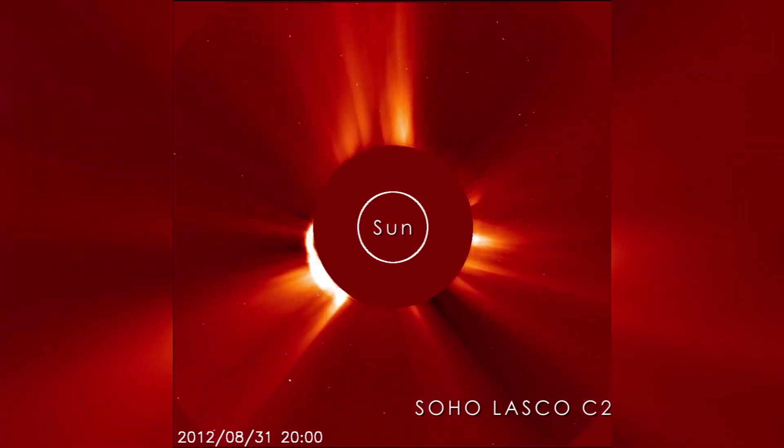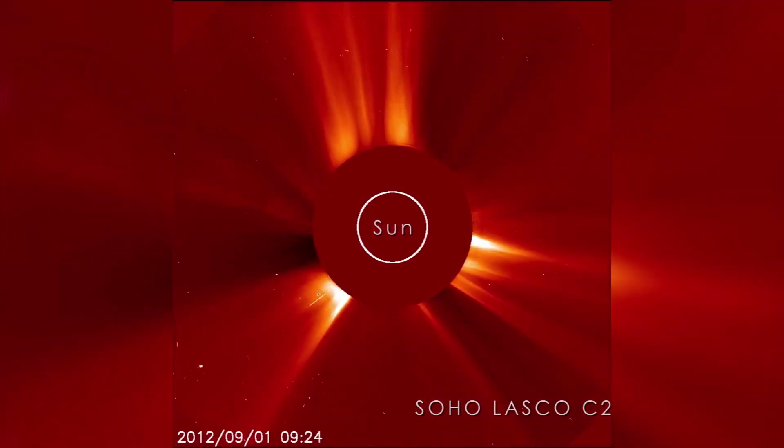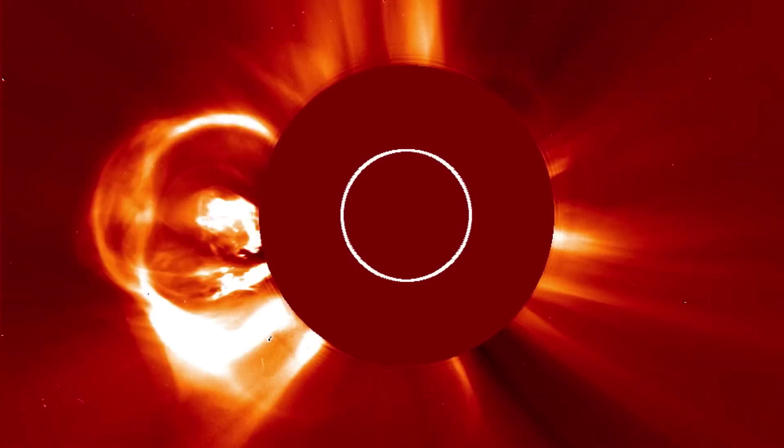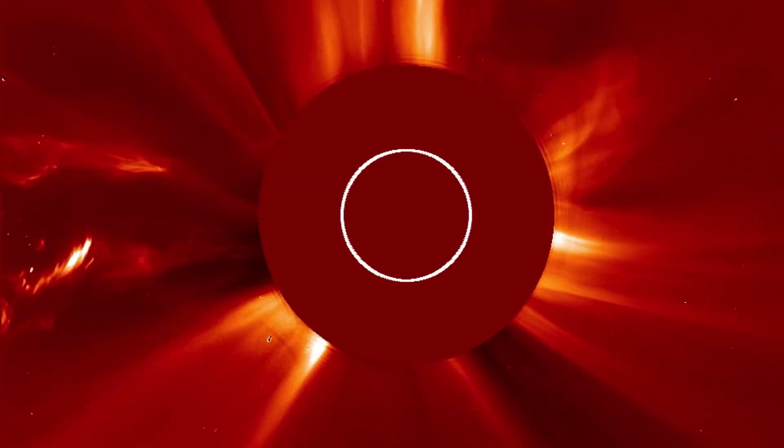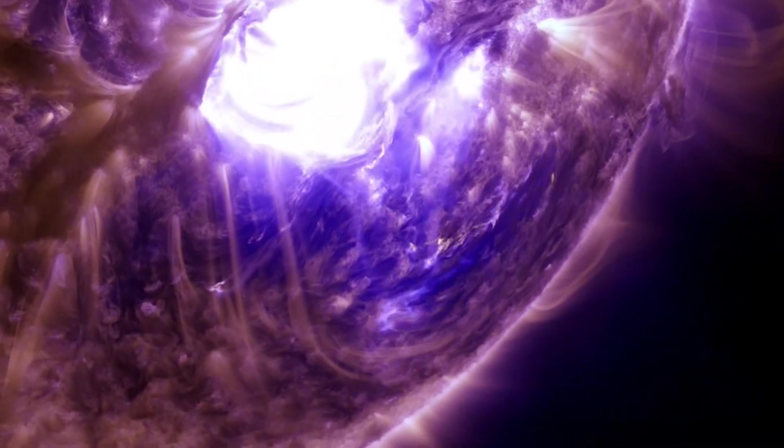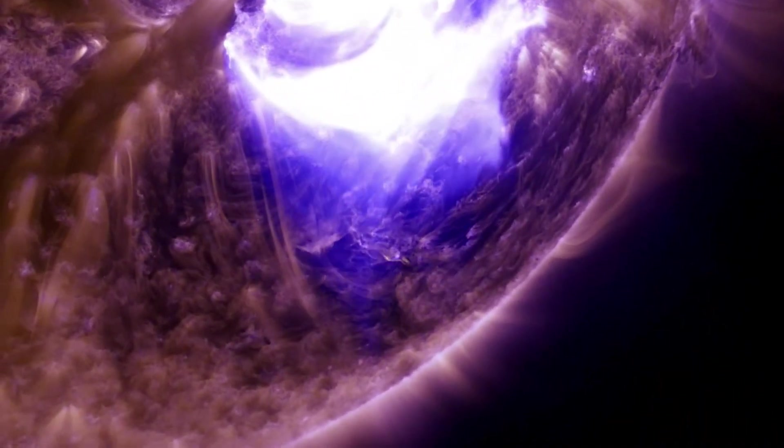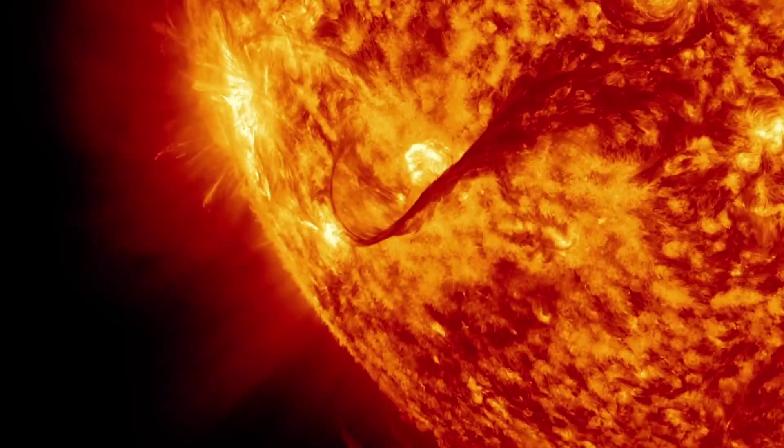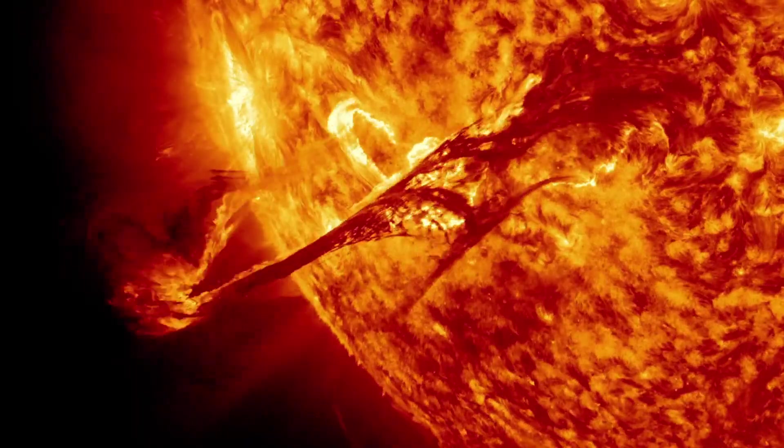Approximately 50% of the time, solar flares are accompanied by coronal mass ejections, which cause plasma expulsion from the Sun. It's important to note that these two phenomena are distinct and only correlate about half of the time. It is possible to have flares without eruptions and vice versa.